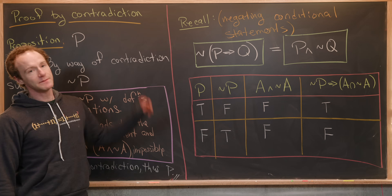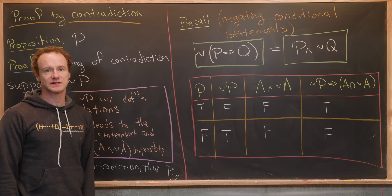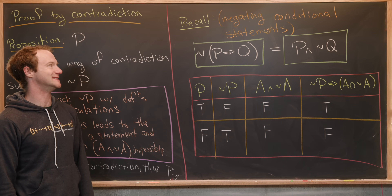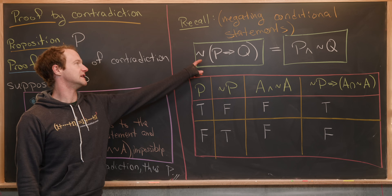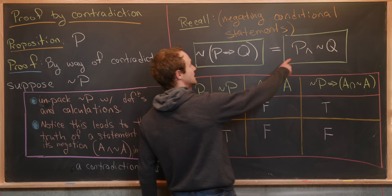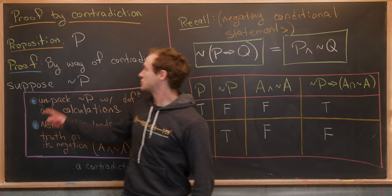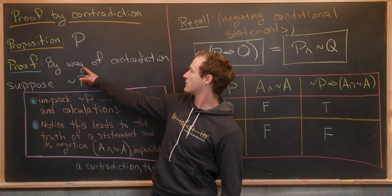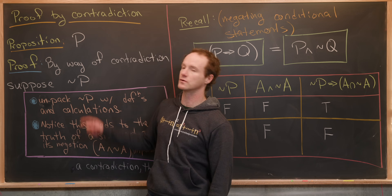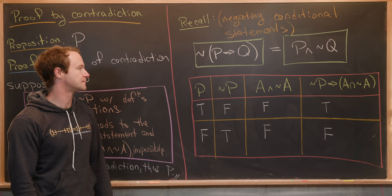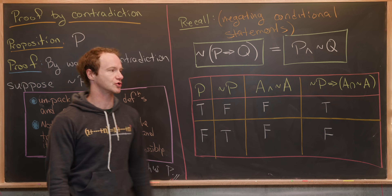This method can be used to prove conditional and non-conditional statements. In case you're using it to prove a conditional statement, recall how to negate one. If you have the conditional statement 'P implies Q,' the negation of that is the conjunction 'P and not Q.' So if you're trying to prove P implies Q, you would start with 'by way of contradiction, suppose P and not Q,' because that's the negation of P implies Q.